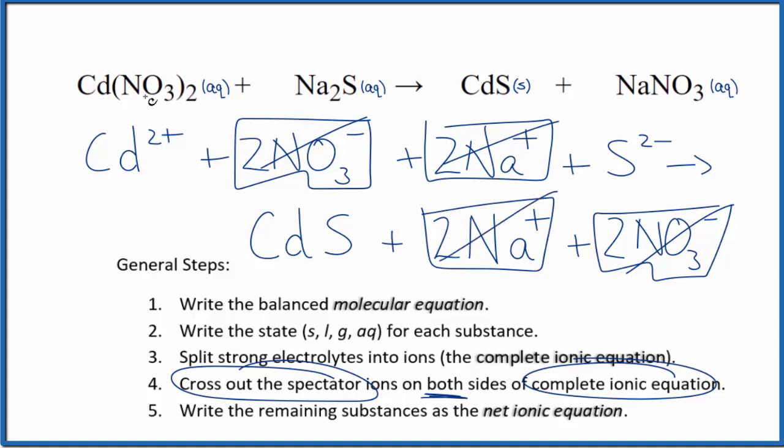What's left, that's the net ionic equation for Cd(NO3)2 plus Na2S. I'll clean this up and write the states. We'll have our net ionic equation.